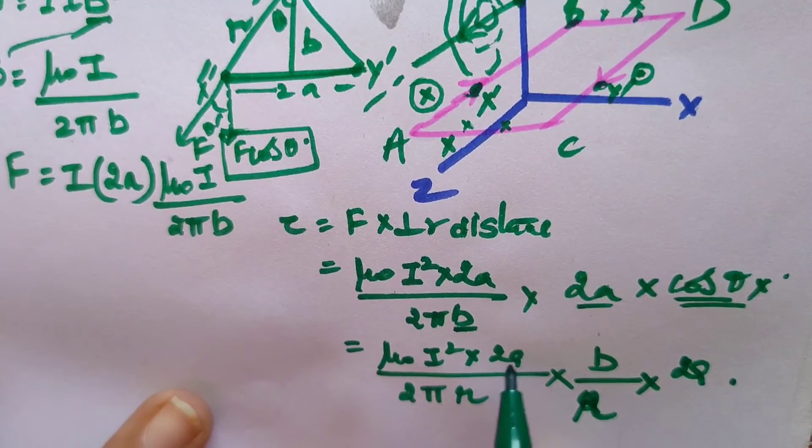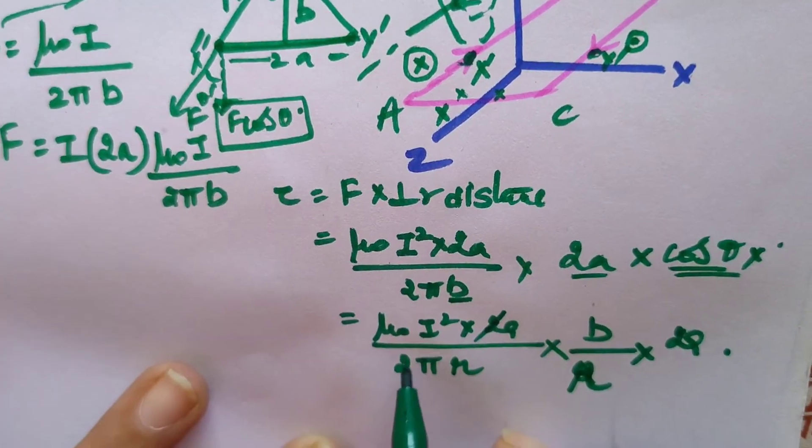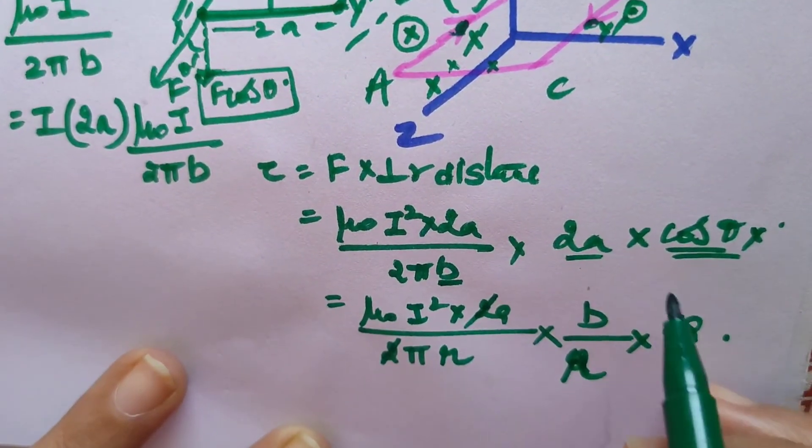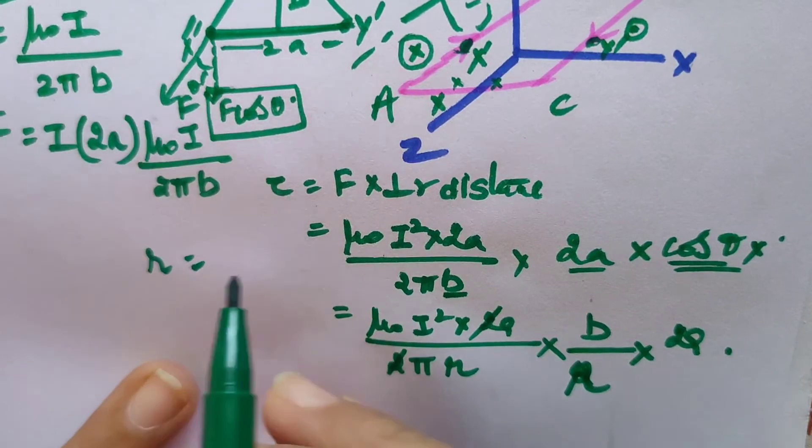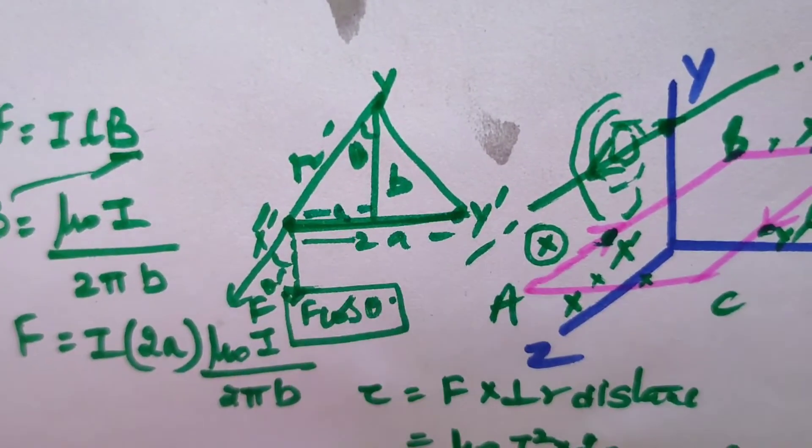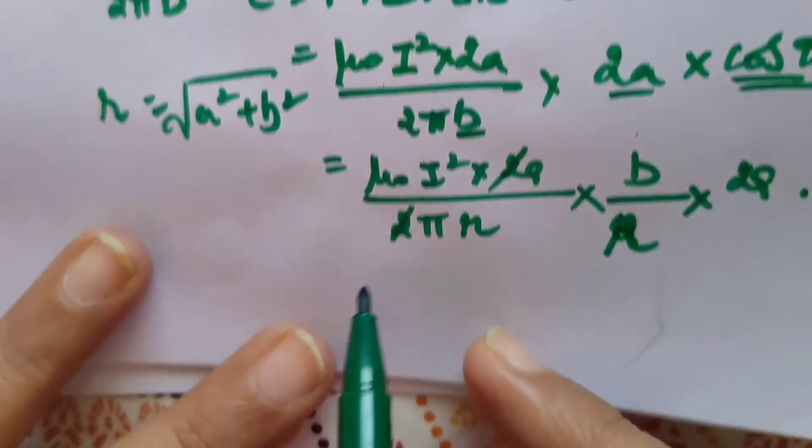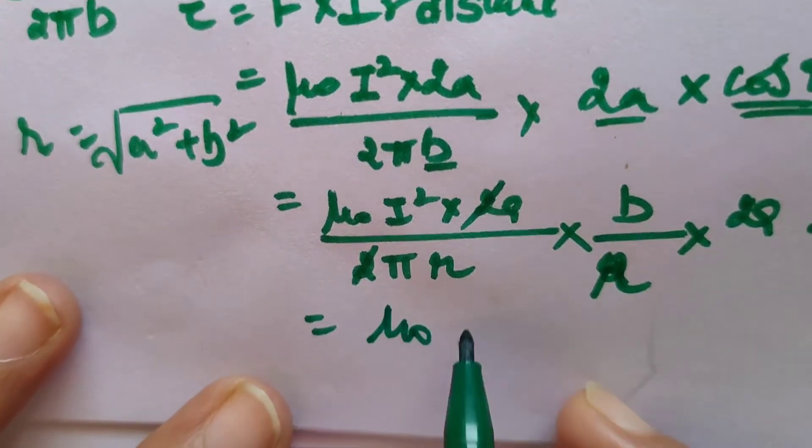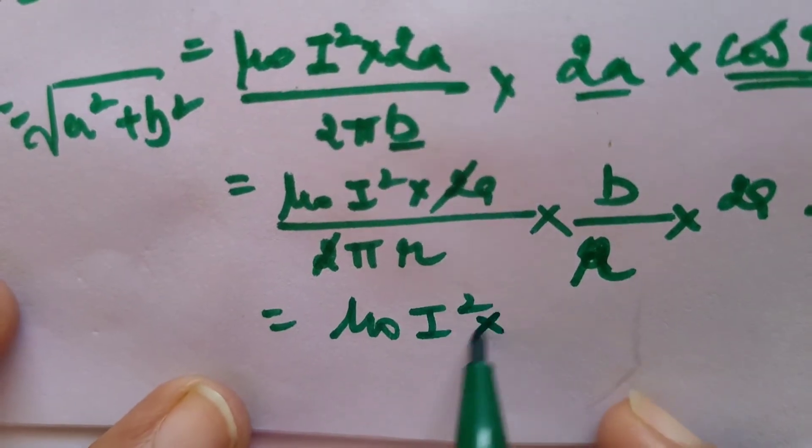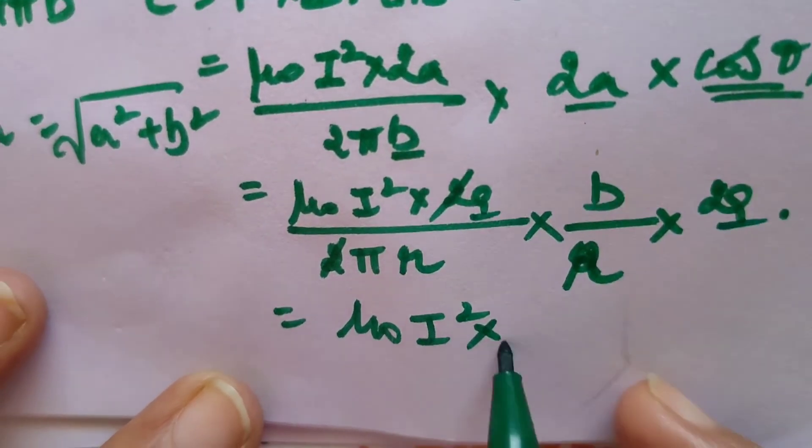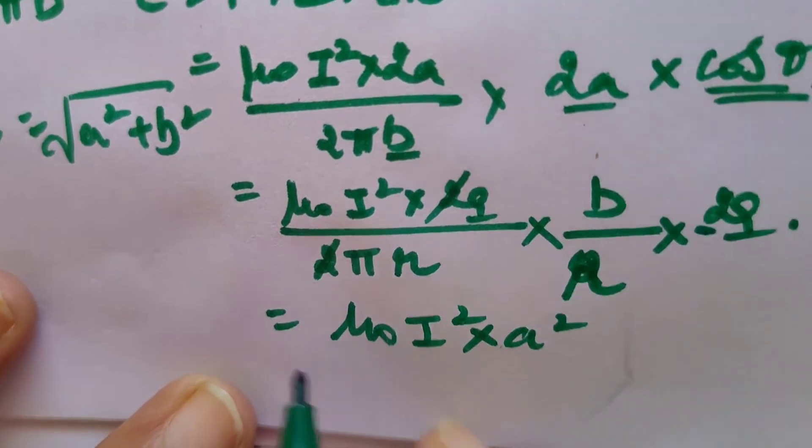So what is the final answer? 2 and 2 will be cut, and for r you are going to use... this is a, so this is going to be a² + b². So overall the answer is μ₀I² times a and this a, this is going to be a².